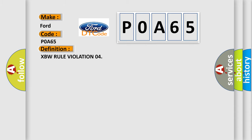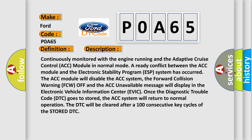The basic definition is XBW Rule Violation 04. Continuously monitored with the engine running and the adaptive cruise control ACC module in normal mode, a ready conflict between the ACC module and the electronic stability program ESP system has occurred. The ACC module will disable the ACC system; the forward collision warning FCW off and the ACC unavailable message will display in the Electronic Vehicle Information Center EVIC. Once the Diagnostic Trouble Code DTC goes to stored, the ACC system will return to normal operation. The DTC will be cleared after 100 consecutive key cycles of the stored DTC.